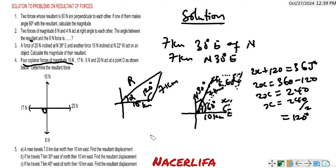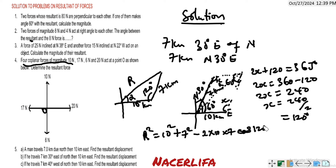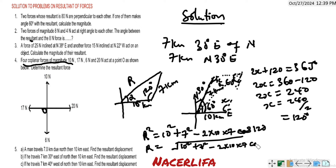R = √(10² + 7² − 2 × 10 × 7 × cos 120°) ≈ 14.8 kilometers. So the magnitude of the resultant displacement is 14.8 kilometers.